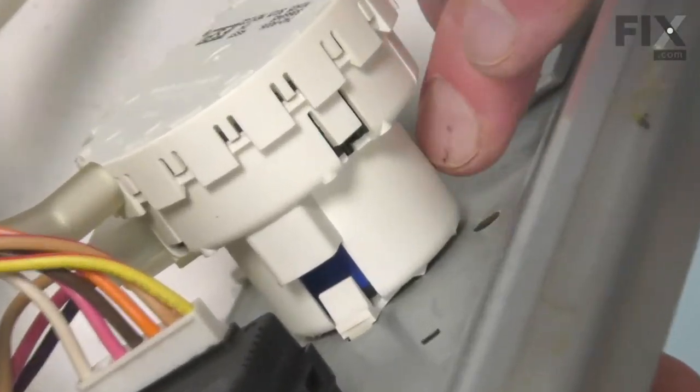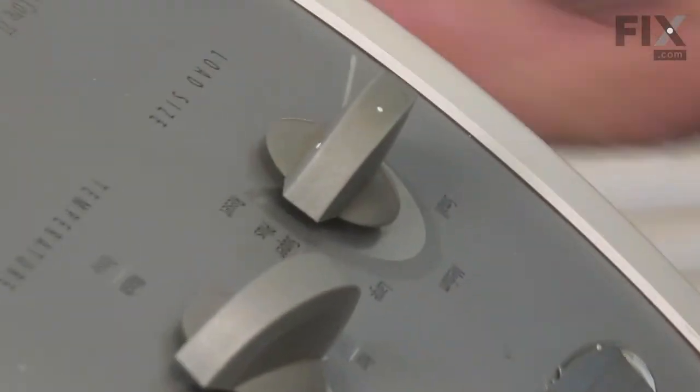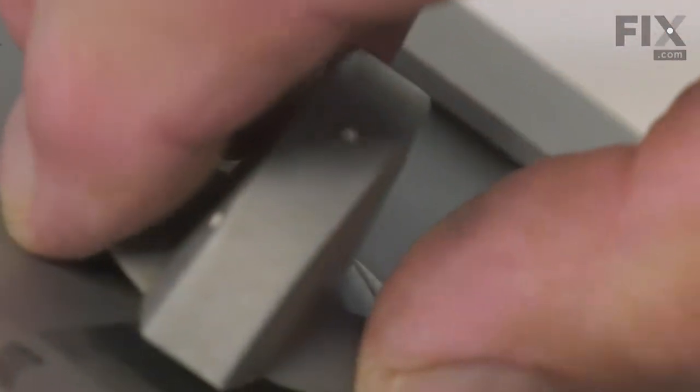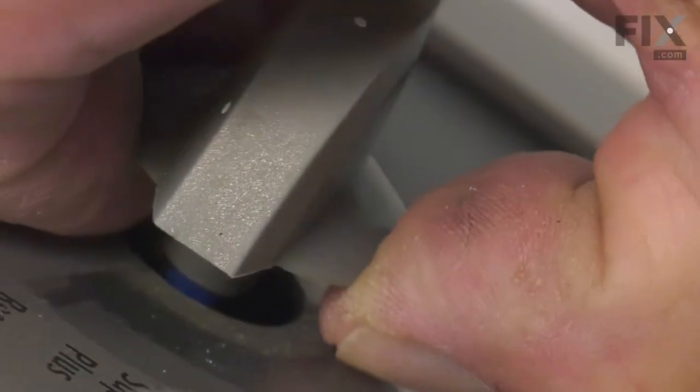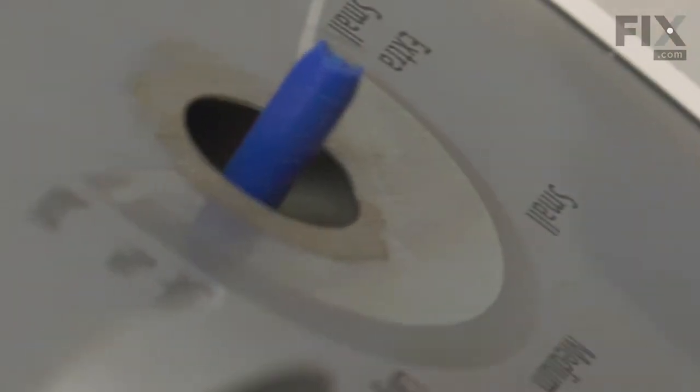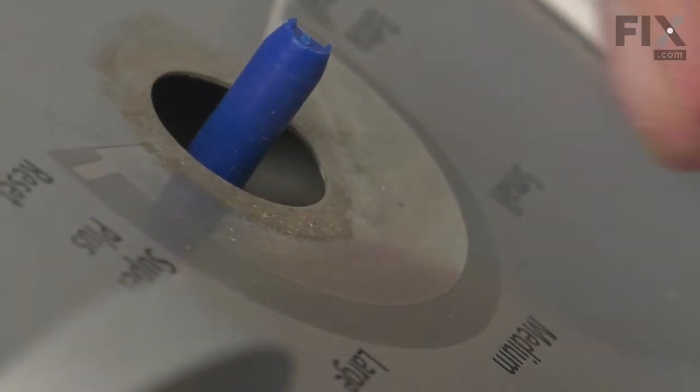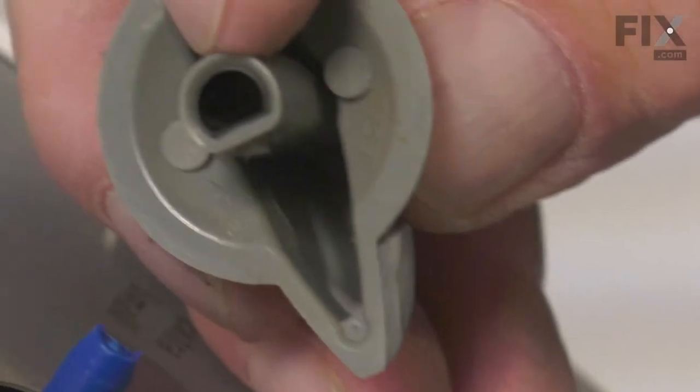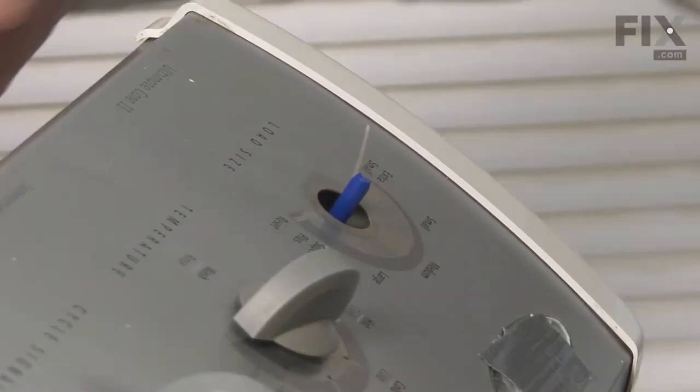Now, next, we'll need to remove the knob from the water level control. Simply grasp it and pull it straight off. Just inspect the shaft to make sure that the little metal insert in the knob stays in the knob. We'll set that aside.